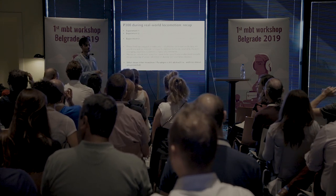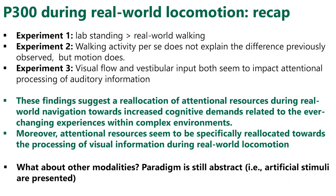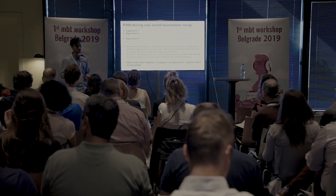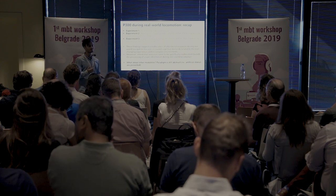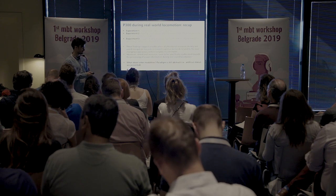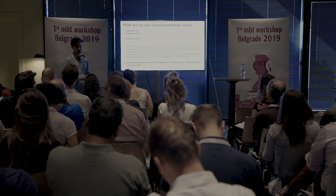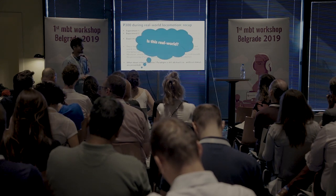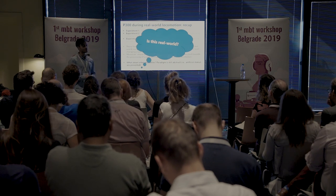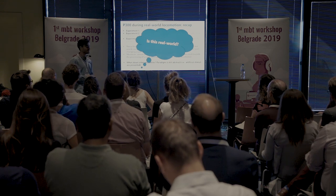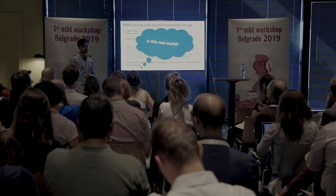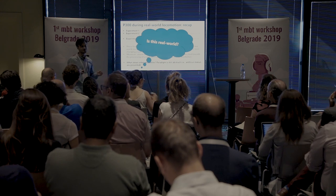What we learned from these studies is that the P300 in the real world can be captured — that's a good thing. It can also show reallocation of cognitive resources, making the point that our cognitive experience is drastically different when we are actually behaving in the real world. However, it was a fairly artificial paradigm, and as discussed, it doesn't really qualify as real-world cognition. That's a nice first step, but I wanted to look at natural events next.